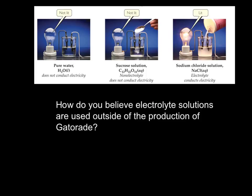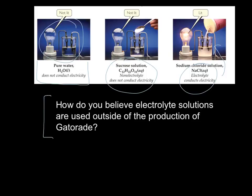Just a little summary of it all. Pure water does not conduct electricity as a molecule, so that light bulb would not be lit. Sucrose is a molecule as well, a non-electrolyte, would not conduct electricity. Sodium chloride, however, is an ionic compound. The Na and Cl would dissociate completely, giving you some conductivity, and that light will light up. A question to leave you with: How do you believe electrolyte solutions are used outside of the production of Gatorade?